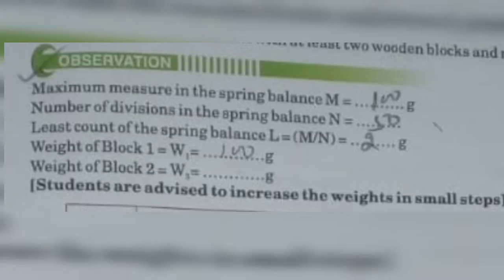In our observations, the maximum measure on the spring balance M is 100 grams. The number of divisions in the spring balance N equals 50. The least count of the spring balance LC equals M divided by N, which equals 2 grams.